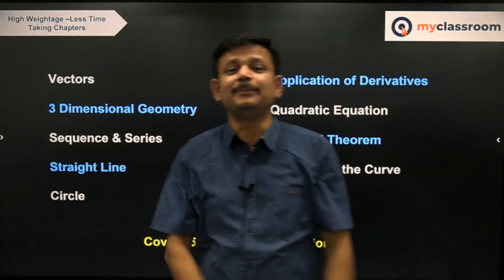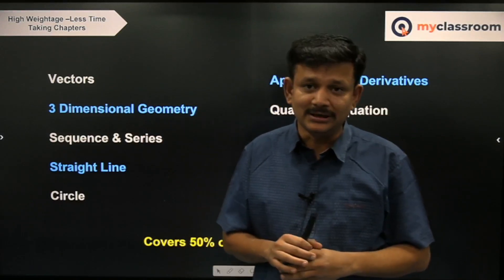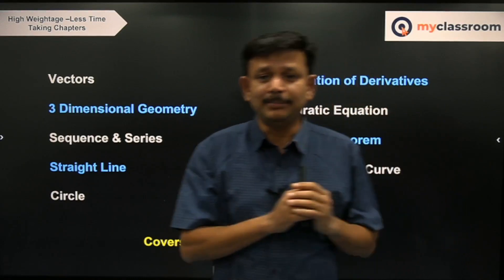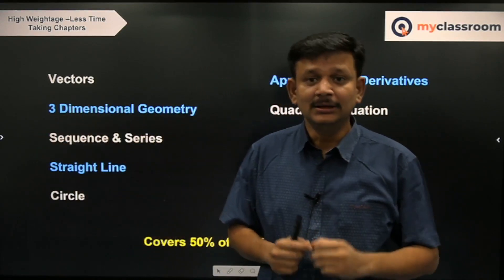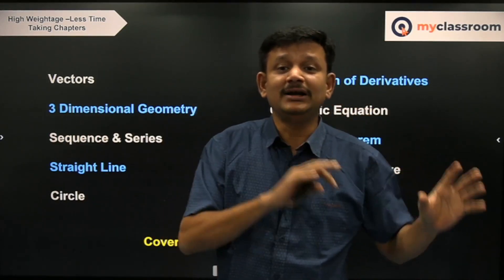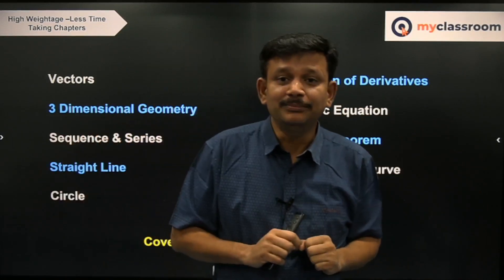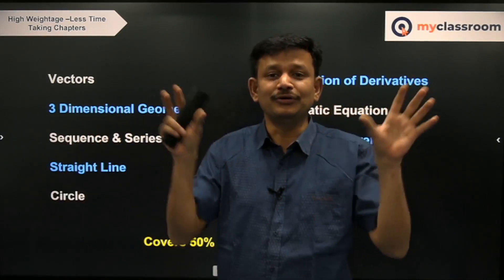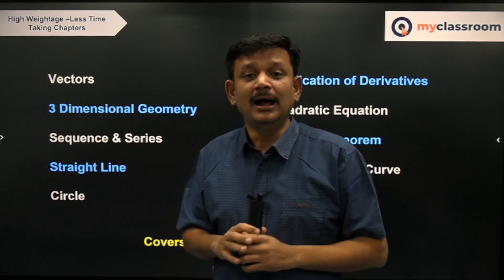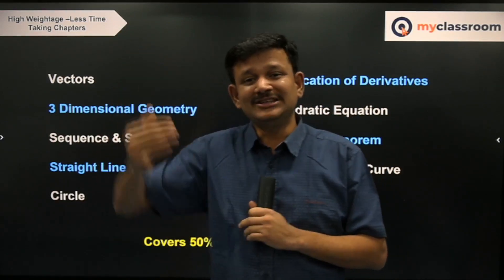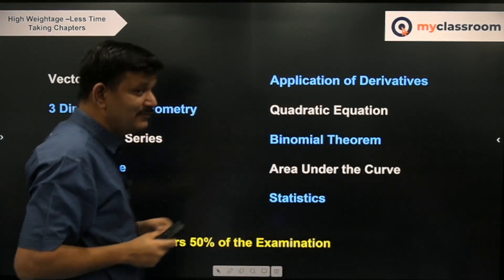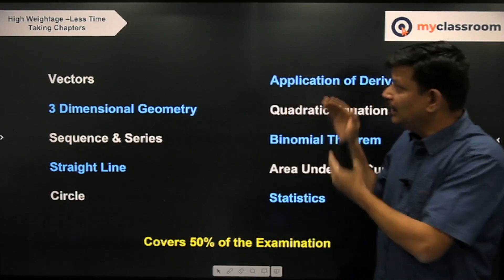Now, if you classify all the chapters, there will be about 25 chapters in mathematics. Some are very difficult and take high time to prepare, some are low time-taking, some have high weightage and some have low weightage. Based on these 2 parameters of weightage and time taken for preparation, you can classify them into 4 groups. Your first focus should be on high weightage topics which can be covered easily within a very short time.